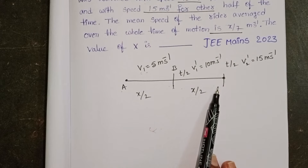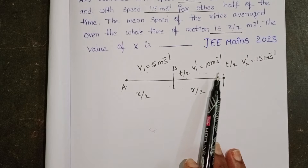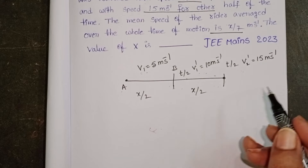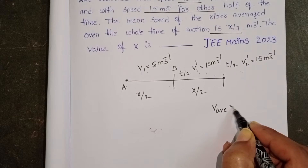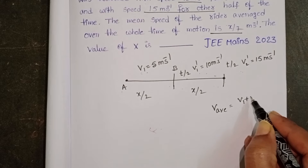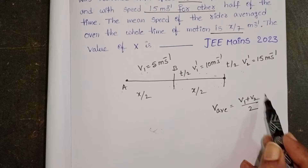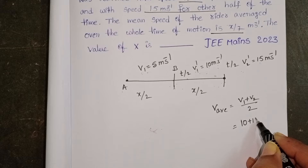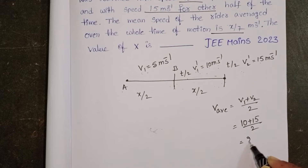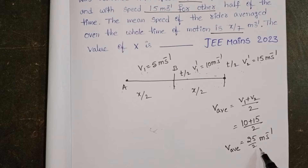The second part is travelled with 2 different speeds, but the time is divided into 2 equal parts. When time is divided into 2 equal parts, the formula to find V average is V1 plus V2 by 2. So for the second part, V average equals 10 plus 15 by 2, which gives 25 by 2 meter per second. This is the average velocity for the second half of the distance.